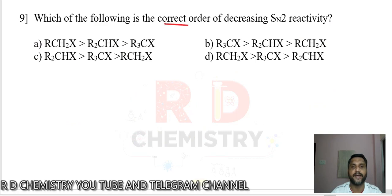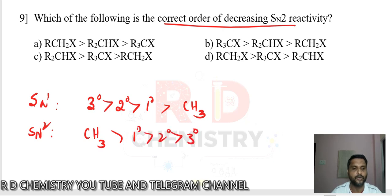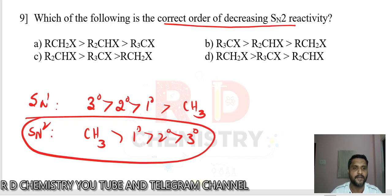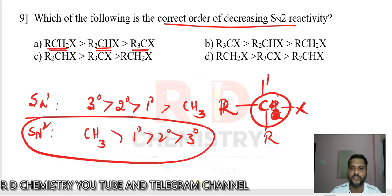Question number 9: which is the correct order of decreased SN2 reactivity? For SN1: tertiary > secondary > primary > methyl halide. For SN2 the order is reversed: methyl halide > primary > secondary > tertiary. The answer shows primary > secondary > tertiary alkyl halides. A primary carbon is attached to only one R group directly; secondary has two R groups; tertiary has three R groups. The answer is option A (first option).